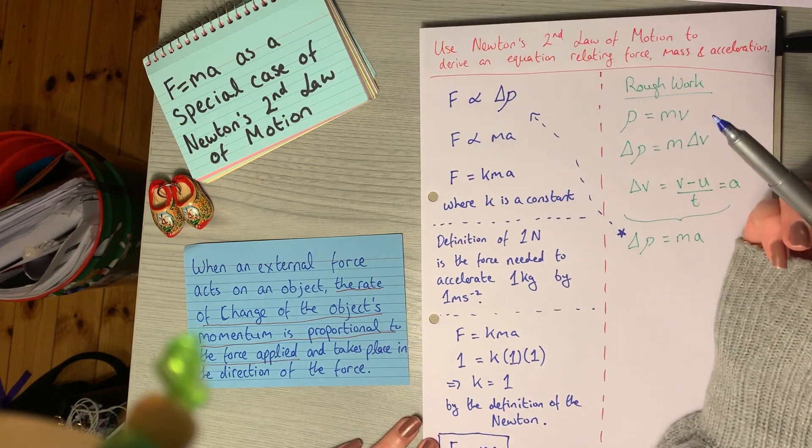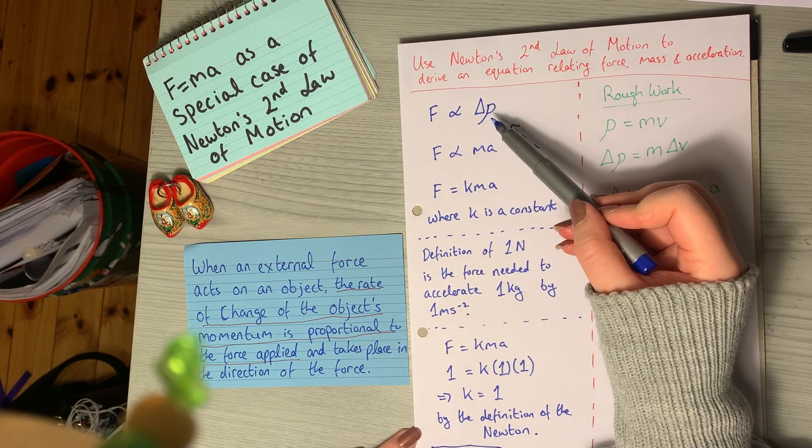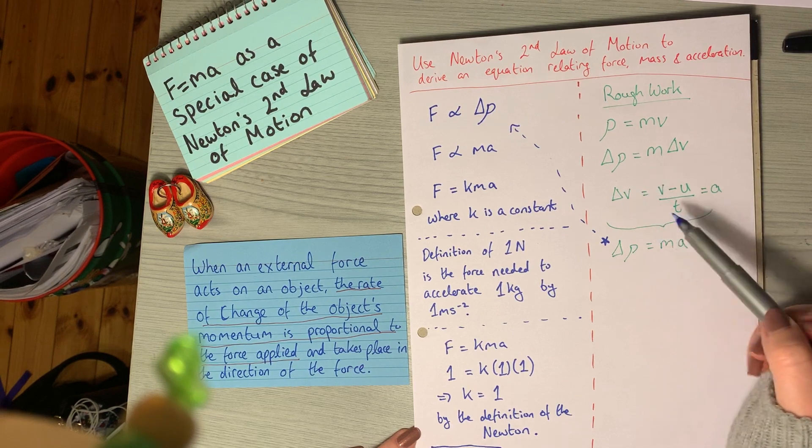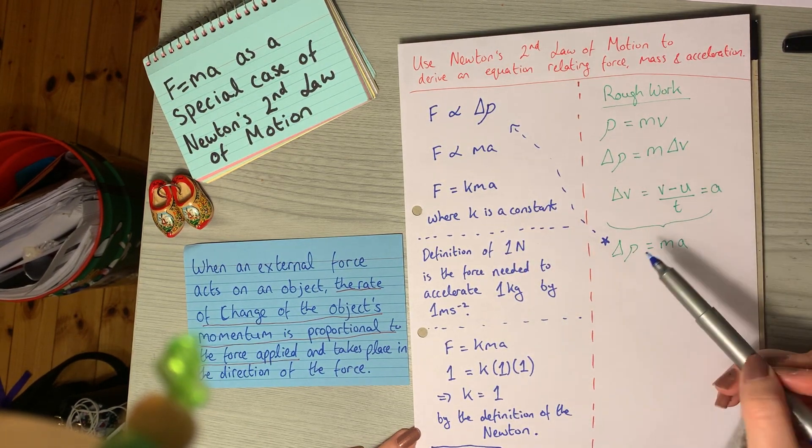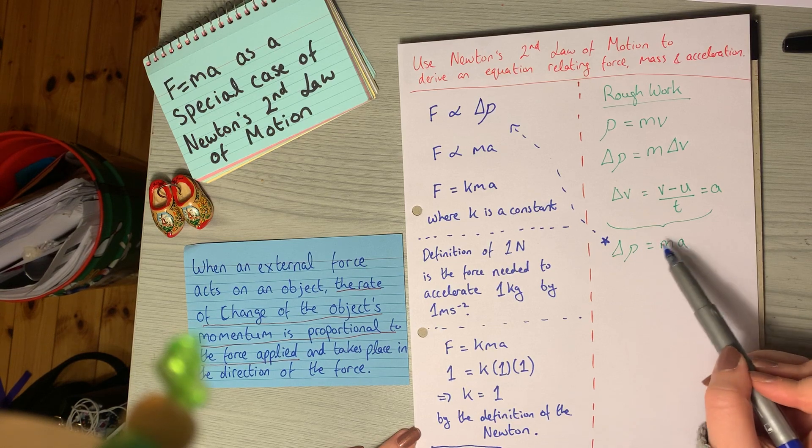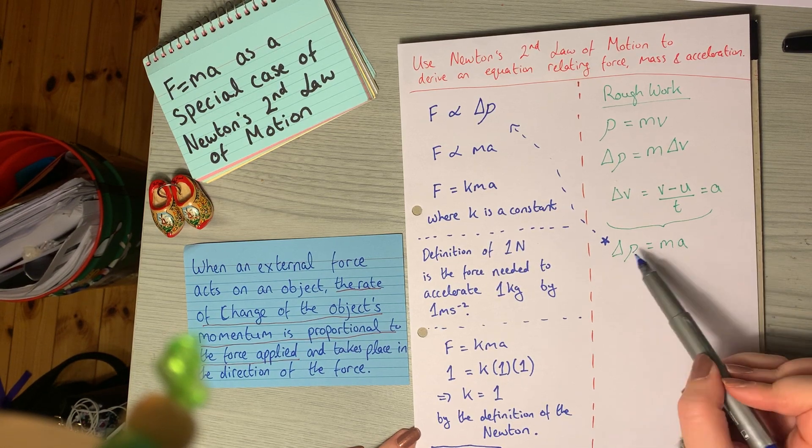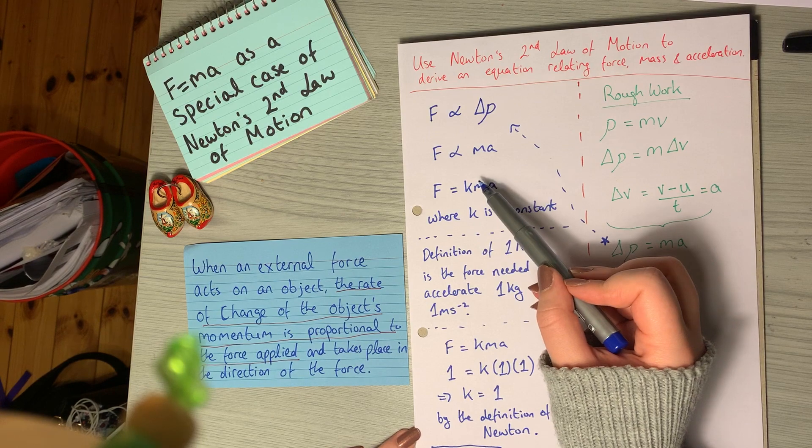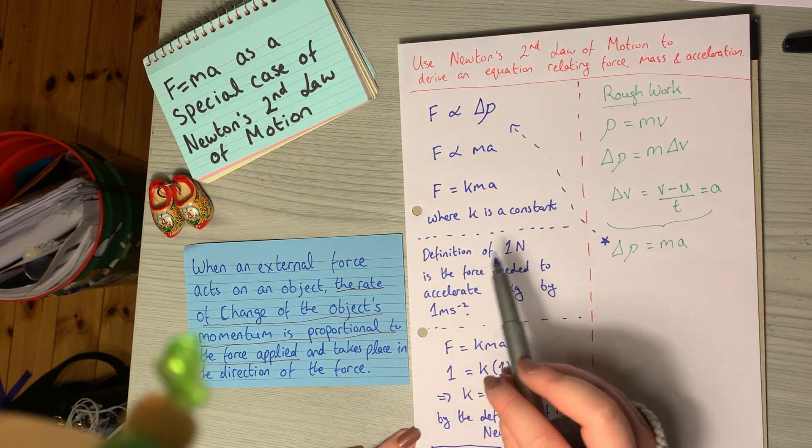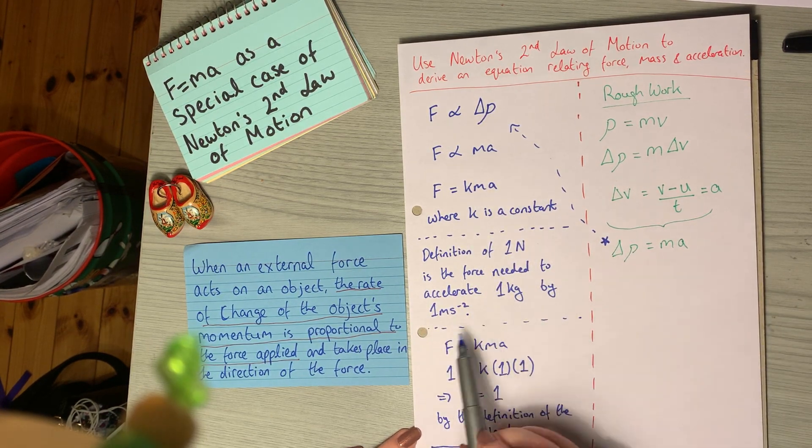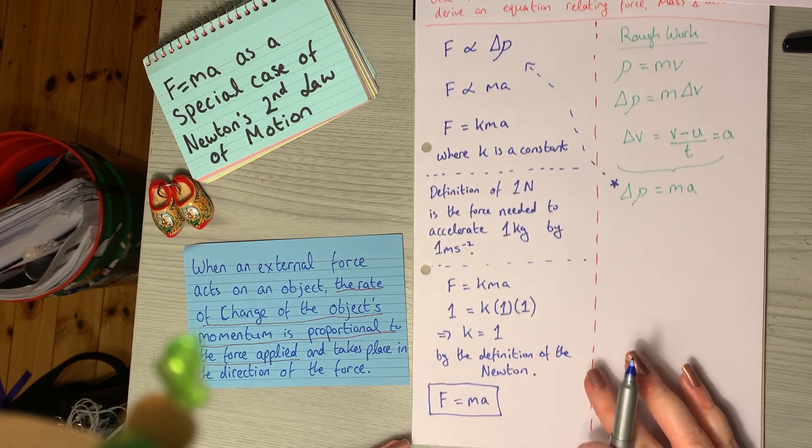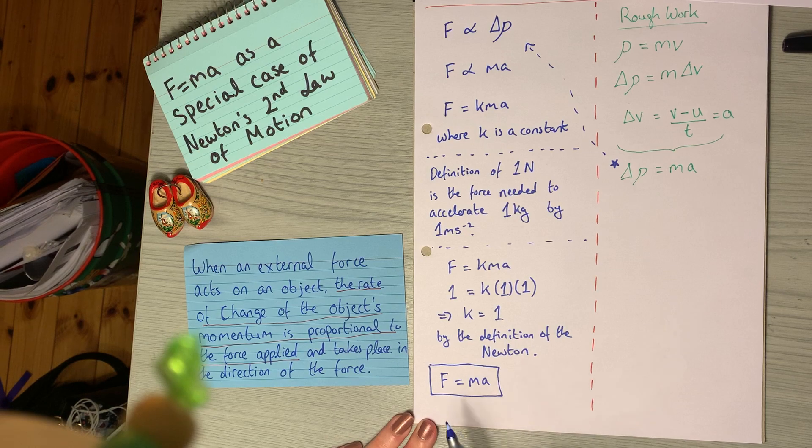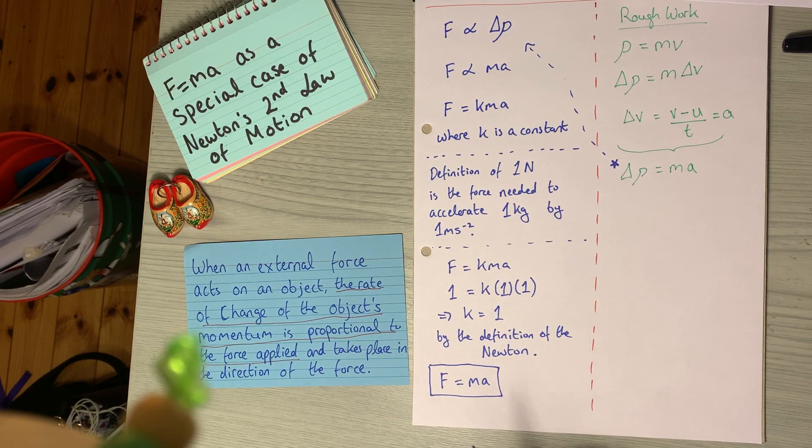Just to summarize, you need to start with Newton's second law. You need to put it into an equation form, and then you need to work through the change in momentum to get down to delta rho equals MA. You sub that in, and then you figure out your constant K by using the definition of the Newton. Then you get F equals Ma as required. So we've just shown that F equals Ma is, in fact, a special case of Newton's second law of motion.